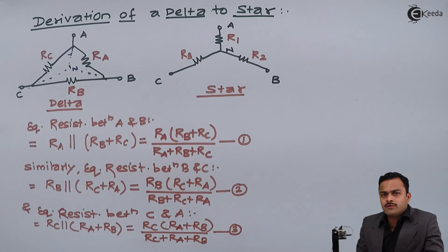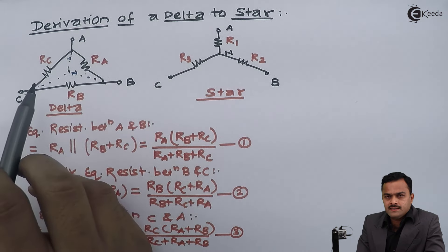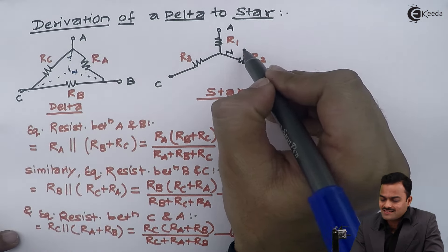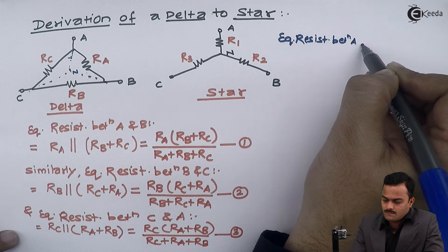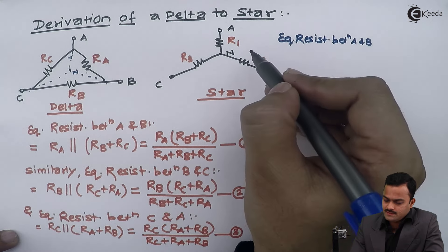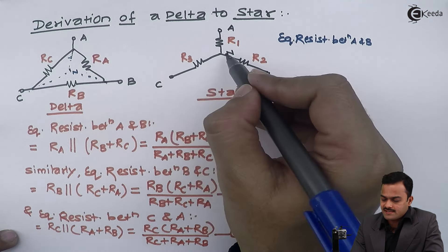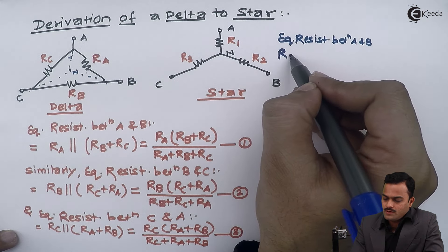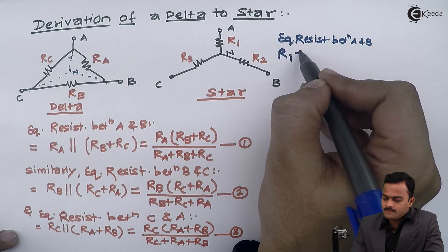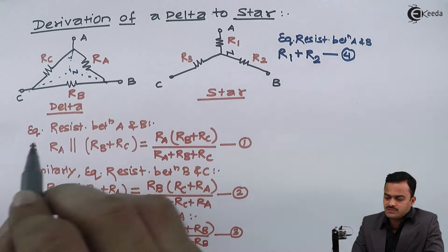Now, considering the same equivalent star circuit which is the equivalent of this delta, the points of interest remain the same: A, B, C. For the star, equivalent resistance between A and B is very simple — C is not of interest and R3 connected to C is open-circuited and redundant. So it will be R1 plus R2 — equation number 4.